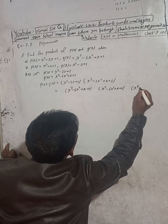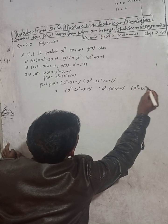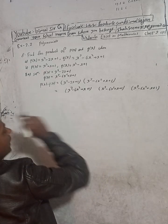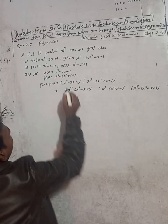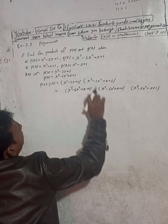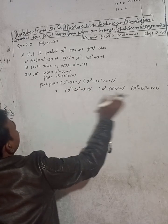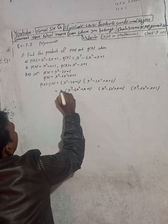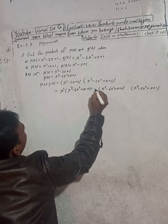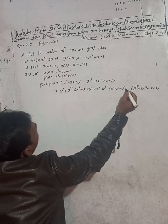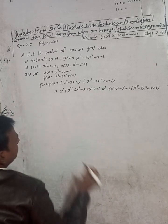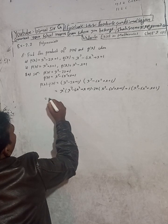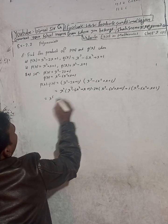So we have x cubed minus 6x squared plus x plus 1, multiplied by x squared minus 2x plus 1. I'll show you how to go step by step through this multiplication.